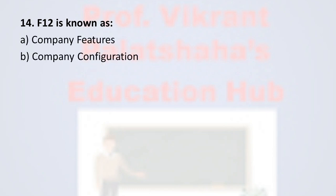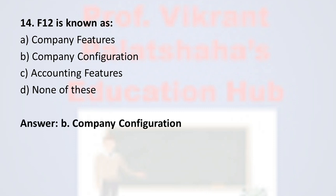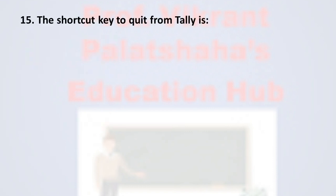Question number fourteen: F12 is known as — Option A: Company Features, Option B: Company Configuration, Option C: Accounting Features, Option D: None of these. The correct option is Option B, Company Configuration. F12 is the shortcut key used for Company Configuration, therefore the correct option is Option B.